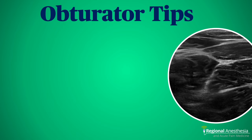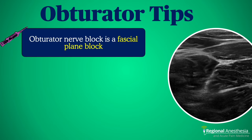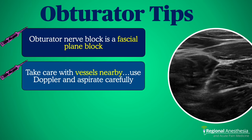Here are some obturator tips and tricks. First, this is a fascial plane block. Sometimes the nerve visualization is poor, in which case you can reliably locate the correct plane and deposit the local anesthetic. Nerve stimulation is also used commonly to confirm that the structure you see on screen is in fact the nerve. Second, there are some decently sized vessels that run in these fascial planes, and clinically significant hematomas after obturator block from inadvertent puncture have been reported. So be careful and use Doppler to plan your needle path.